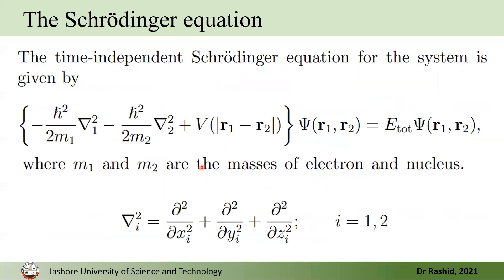In the case of the hydrogen atom, the nucleus has only one proton. So the Schrödinger equation would be like this: this is the kinetic energy term for the electron, this is the kinetic energy term for the nucleus or proton, and this is the potential between the electron and the nucleus. χ(r1, r2) is the wave function, E_total is the total energy of the system, where m1 and m2 are the masses of the electron and nucleus.